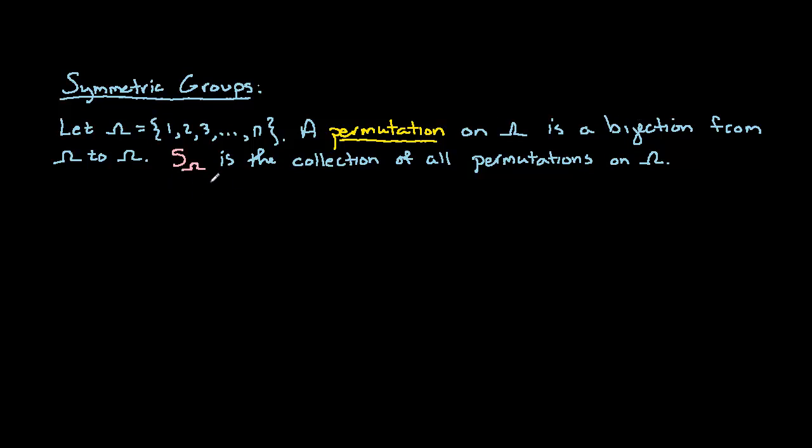Now, S sub omega, this is the symmetric group on omega, is simply the collection of all permutations on omega. All right, so let's take a look at an example.